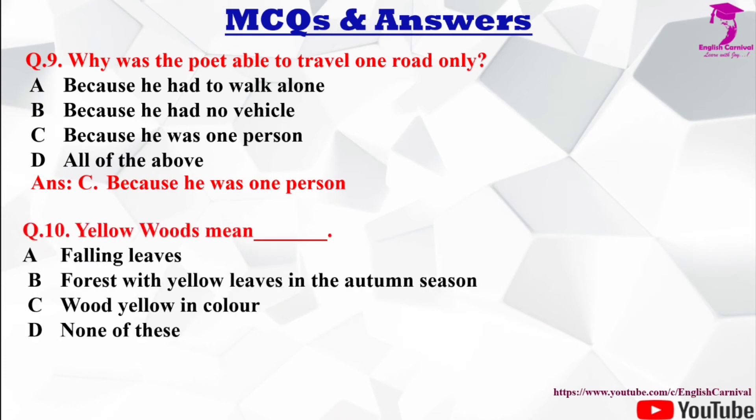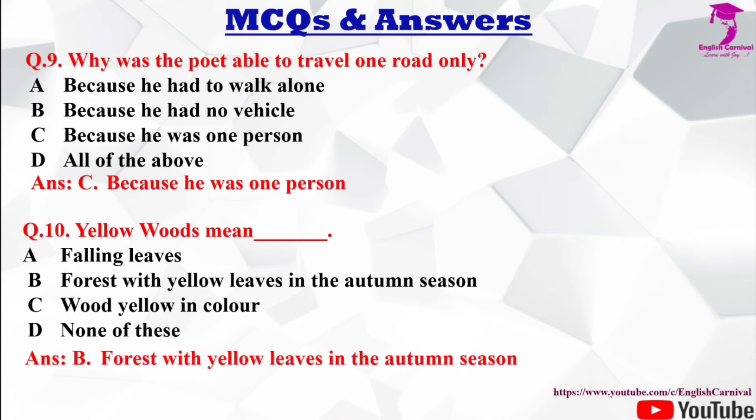Question number 10: Yellow woods mean ___. Options: A) falling leaves, B) forest with yellow leaves in the autumn season, C) wood yellow in color, D) none of these. The correct answer is B — forest with yellow leaves in the autumn season.